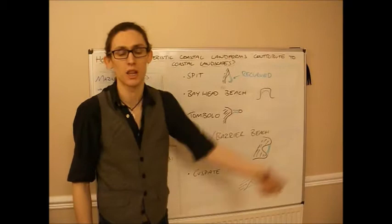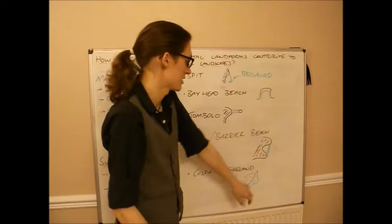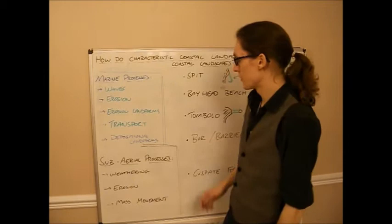Finally, there's cuspate foreland, which is a triangular projection from the land. We're not entirely sure how they form. But one suggestion is that it's two spits which have kind of run into each other from two different sets of longshore drift and extended outwards. Regardless, these are the deposition features that we get for depositional landforms.